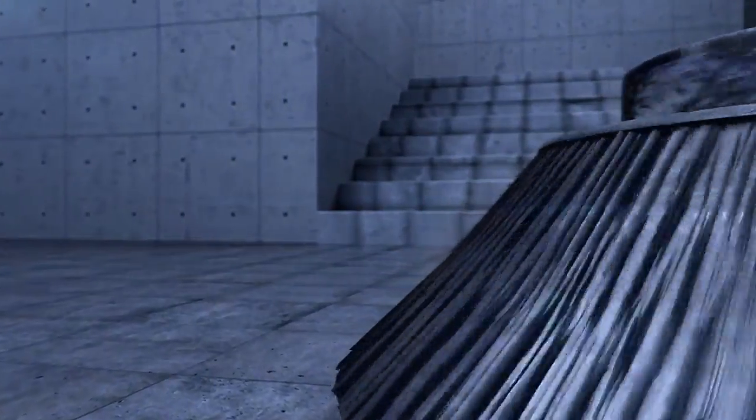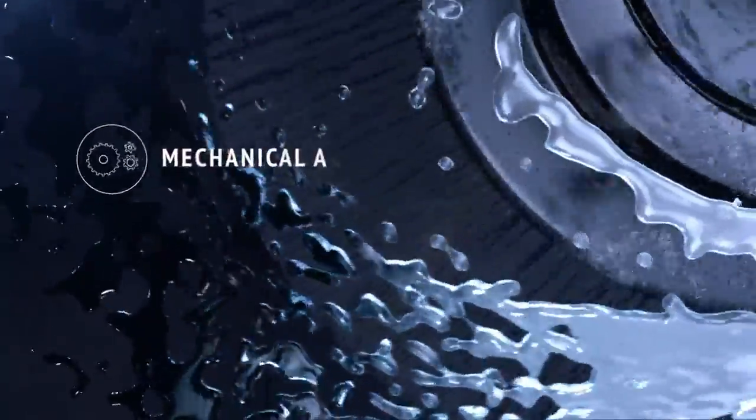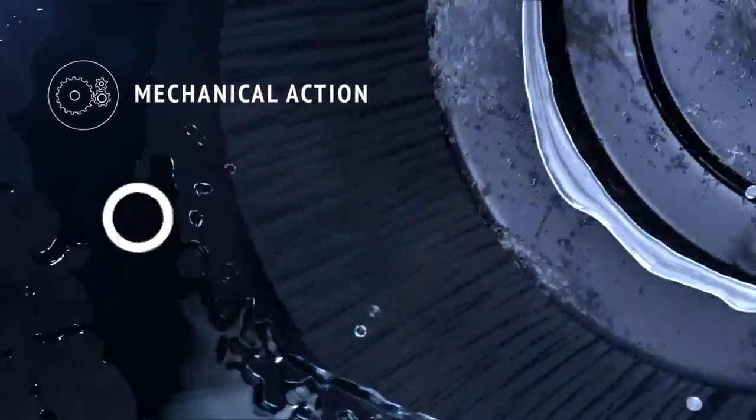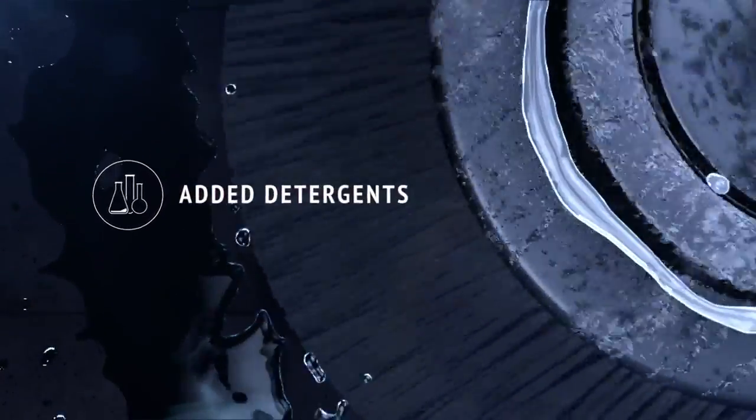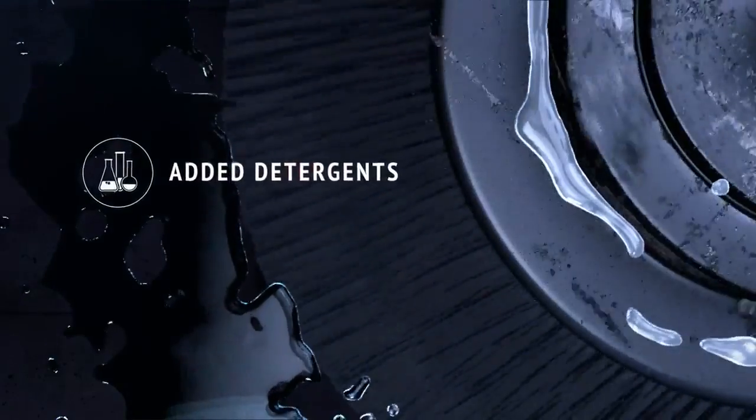Traditional floor scrubbers clean through three mechanisms on the floor: hydration by the water being deposited, the mechanical scrubbing action of the brushes or pads, as well as the cleaning effects of any detergent added to the solution.